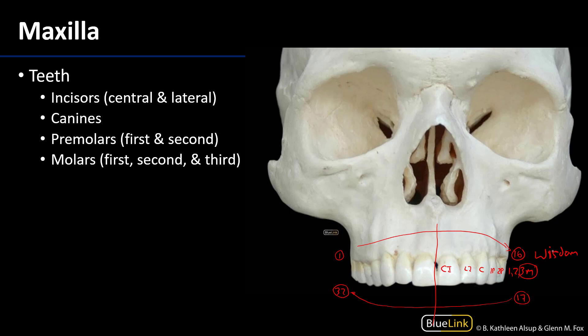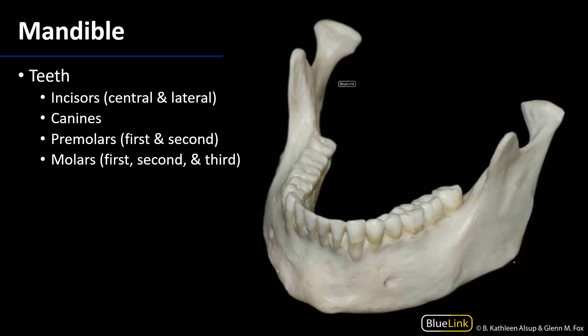Looking at the mandible, tooth number 17 would be a third molar, then a second molar, and then a first molar — those are your mandibular molars.